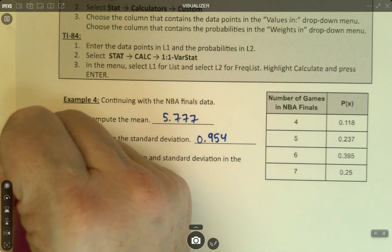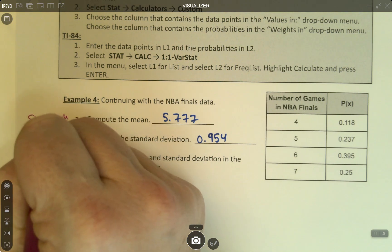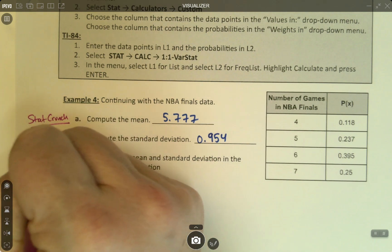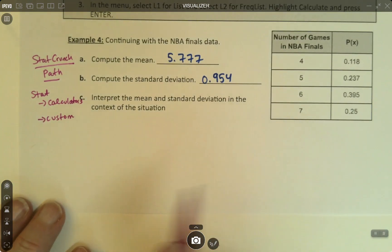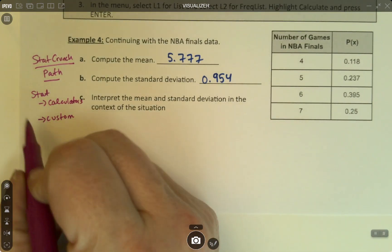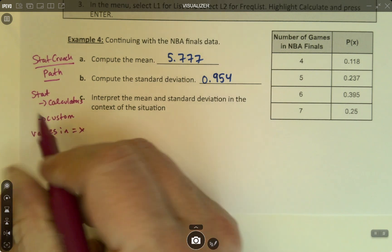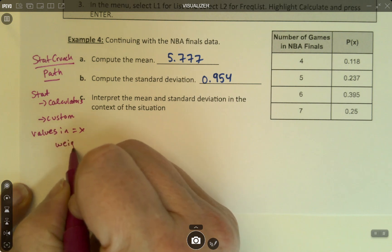We went to Stat, Calculators, Custom, and then it asked us a question. It said the values in, which were our data points, so the values in were the x, and the weights were the probabilities.